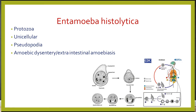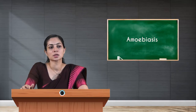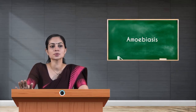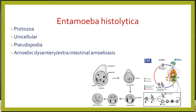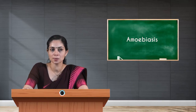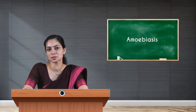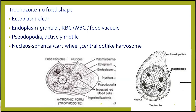The parasite survives in three different stages: trophozoite, pre-cyst, and cyst. In the first stage — the trophozoite — there is no fixed shape. You have a clear ectoplasm and a granular endoplasm. Inside the endoplasm, you find RBCs, WBCs, and food vacuoles. Pseudopodia are present, making the parasite actively motile.